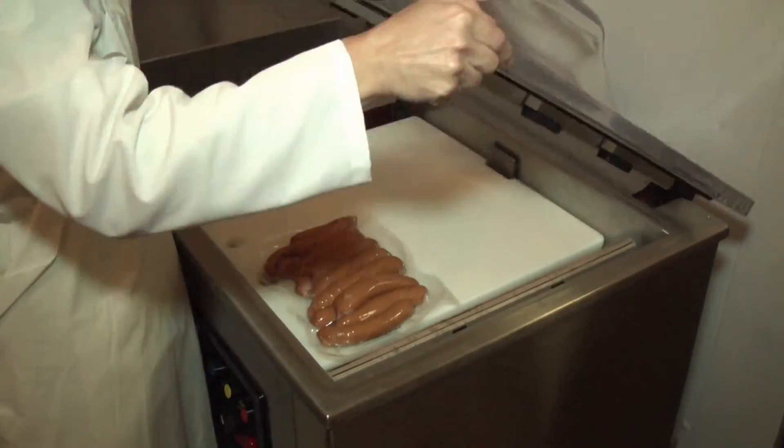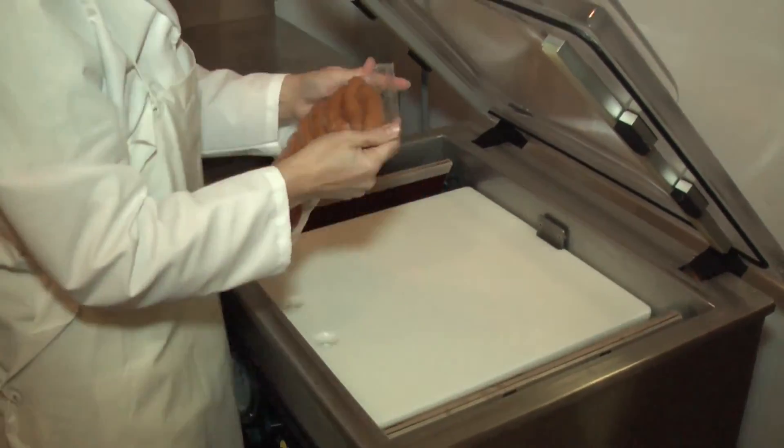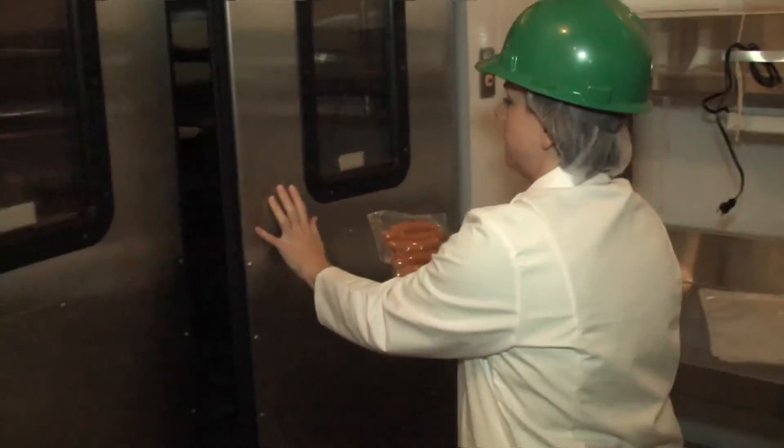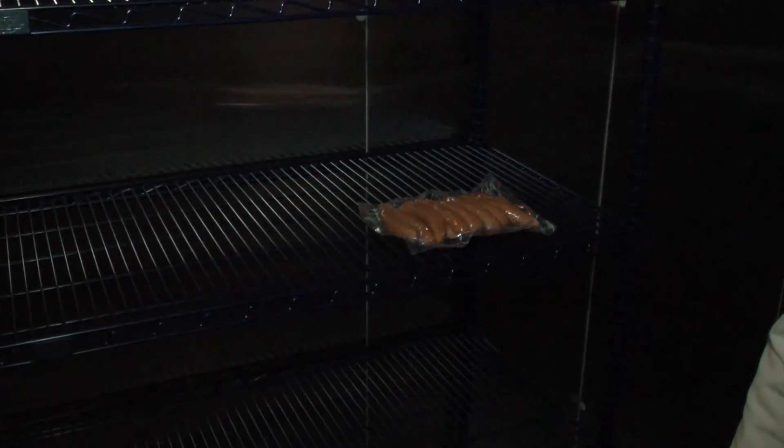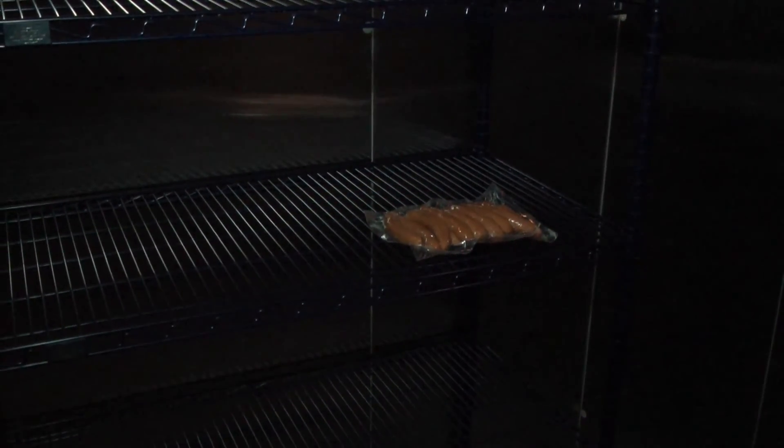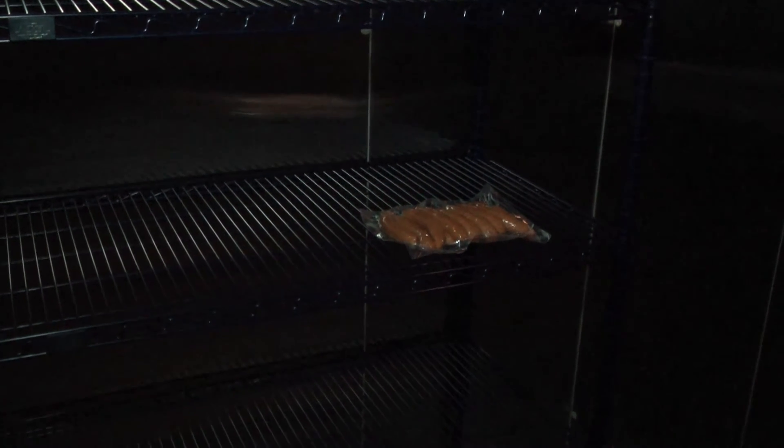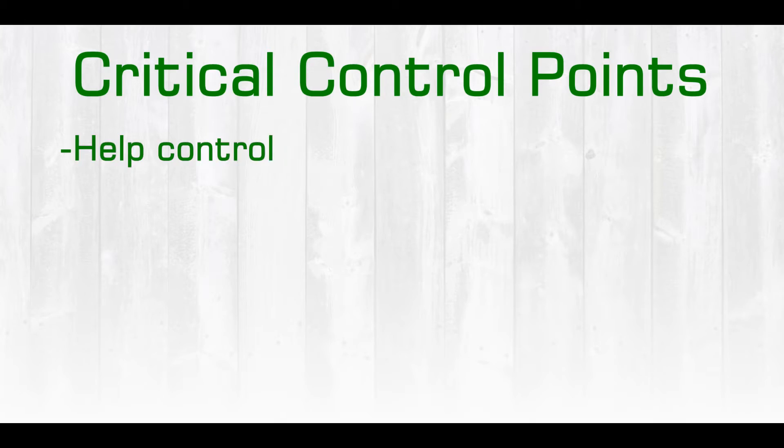We also know that there is a certain temperature range and a certain amount of time that we need to chill a product down to in order to prevent hazardous microorganisms from multiplying. So refrigerating a pre-cooked food item is a way to prevent microorganisms from multiplying. Critical control points control product safety.